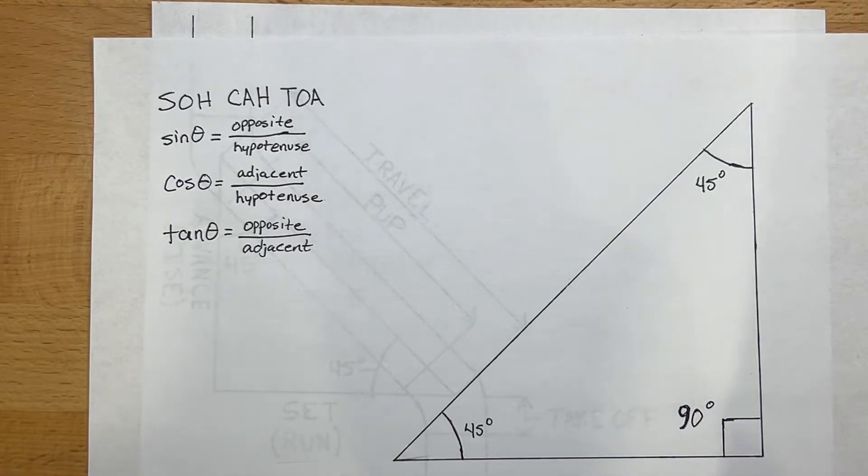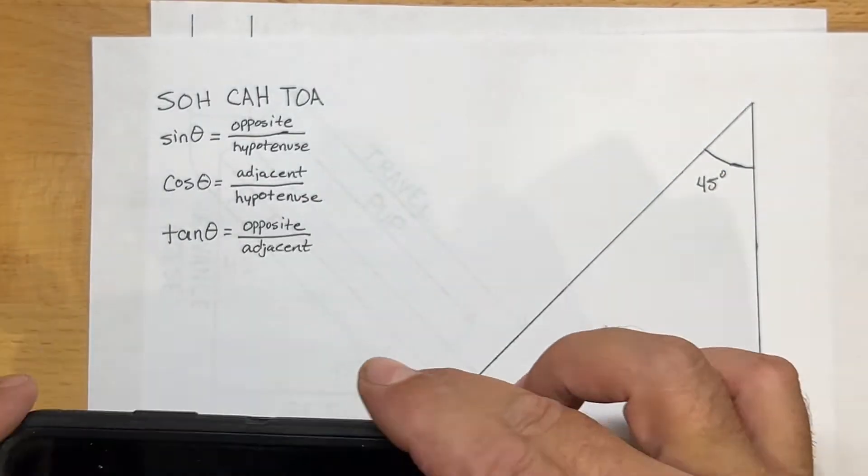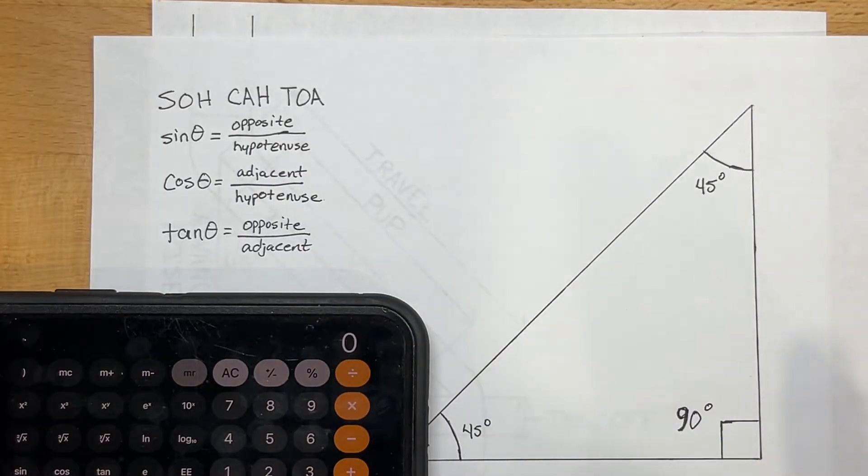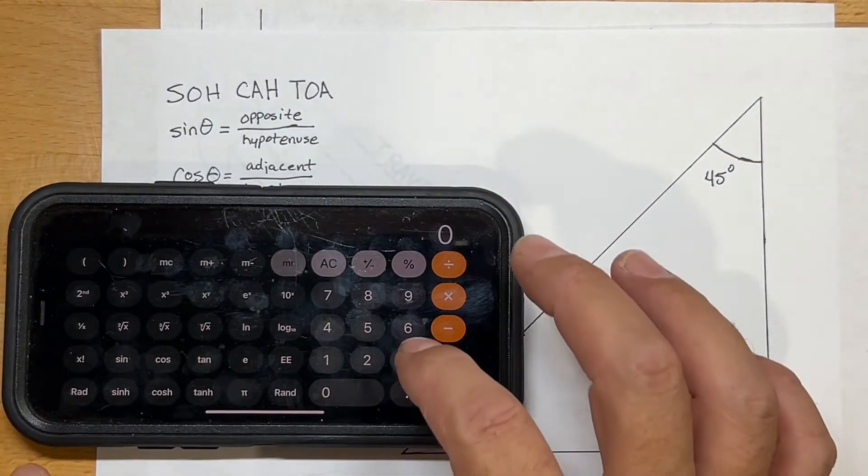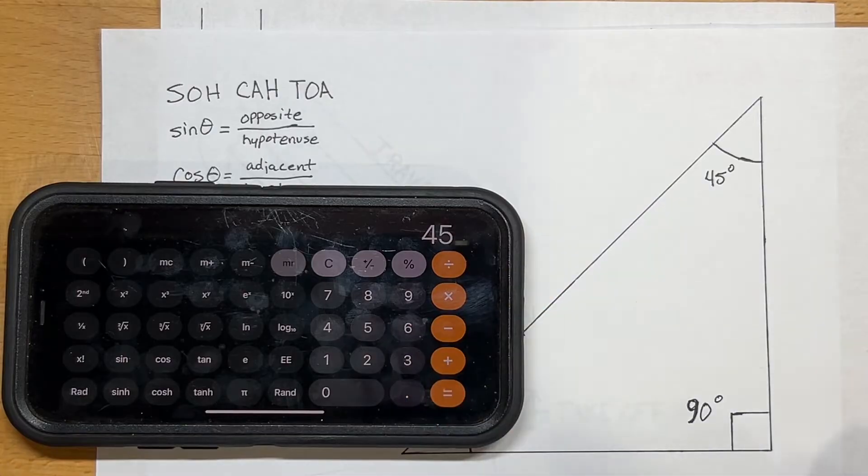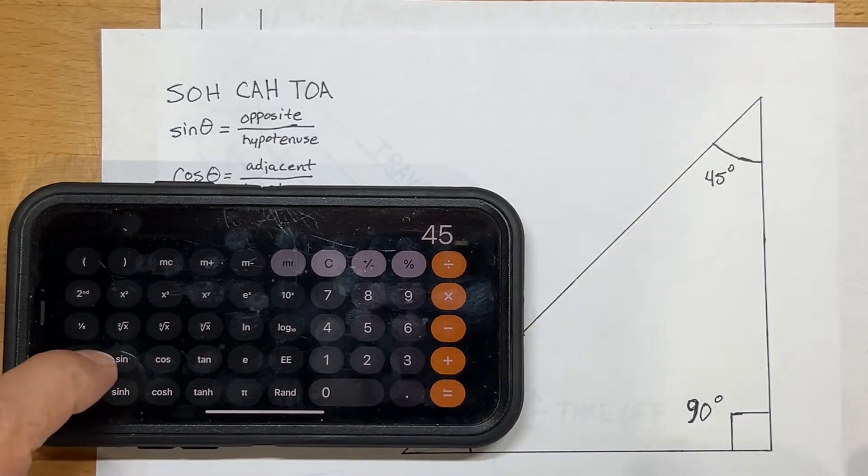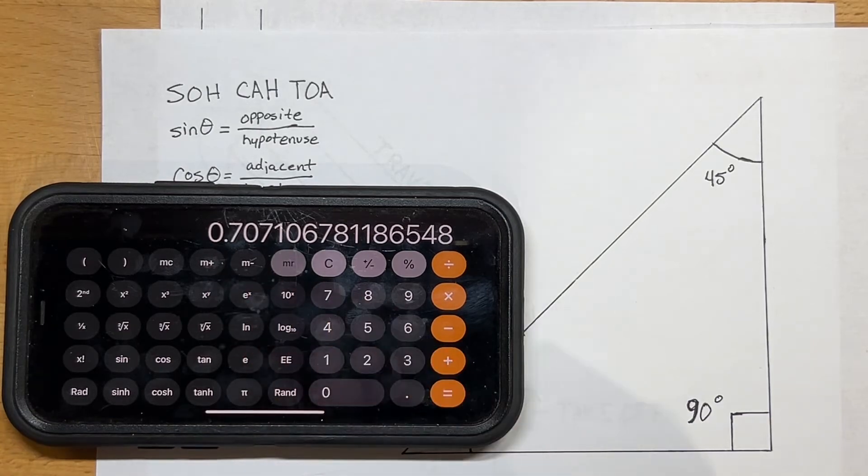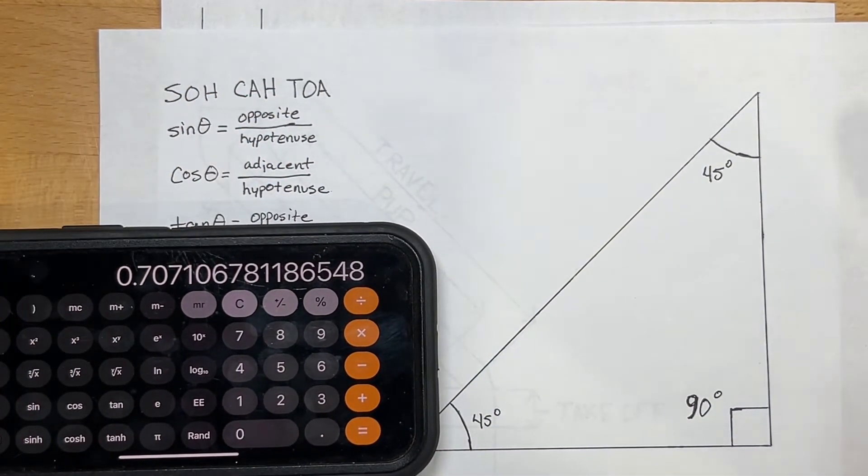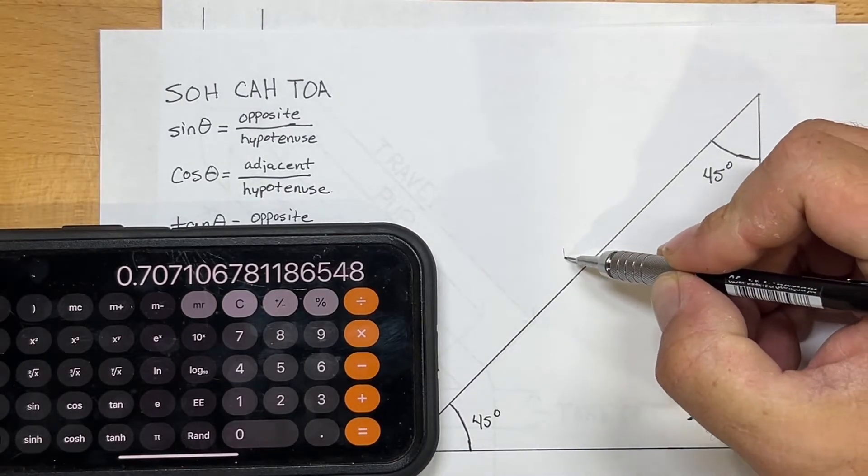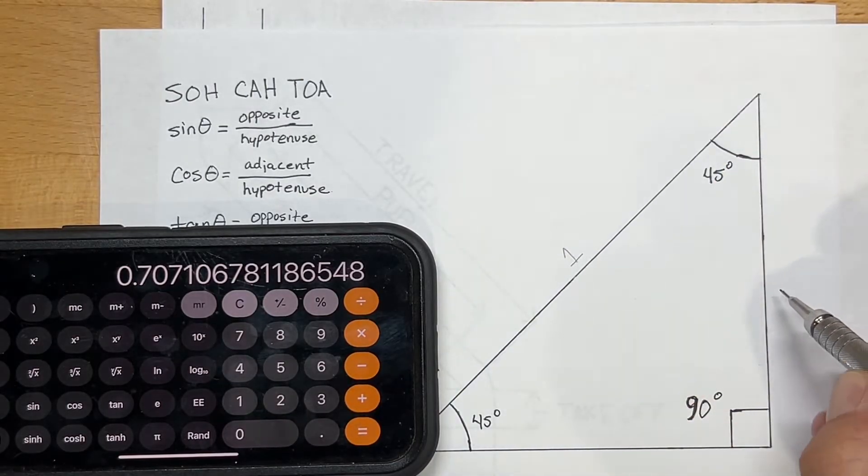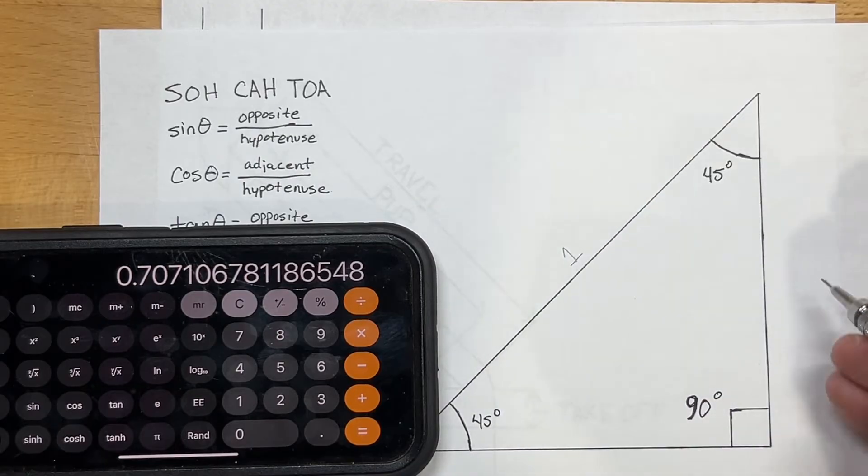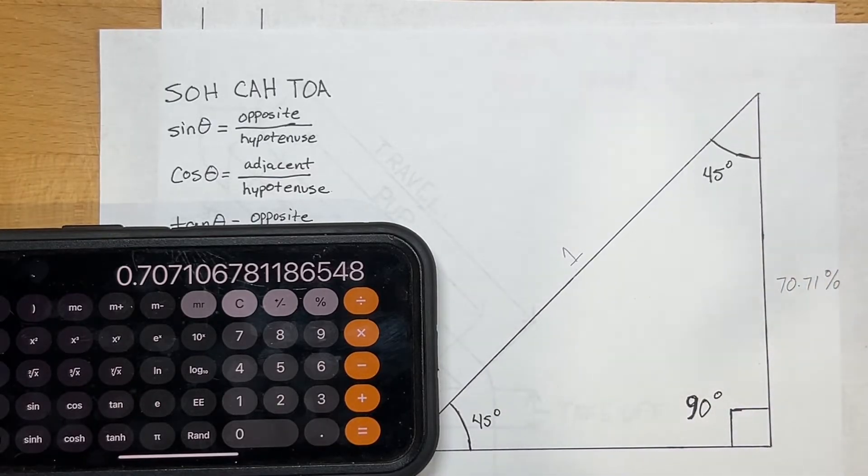So if we do, in our case, it's a 45-degree triangle, and I'm going to do this on an iPhone. So the inputs are a little bit different. So we put our degree in first, and then we hit sine. And that tells us that it is 0.707. Now what that means is that for if the unit of length is one here, then this side, the opposite from our angle, will be 70.71% the length of the hypotenuse or the travel.